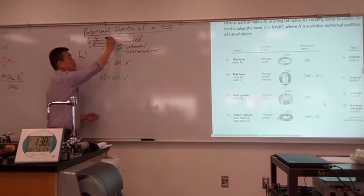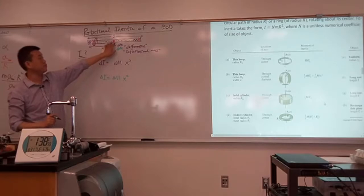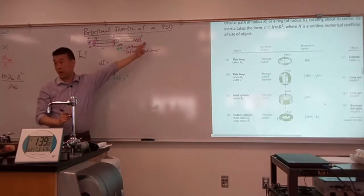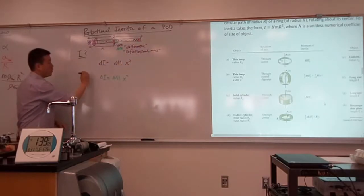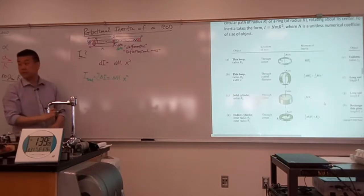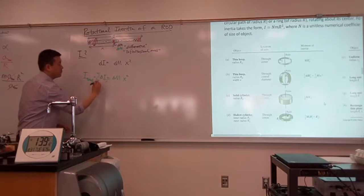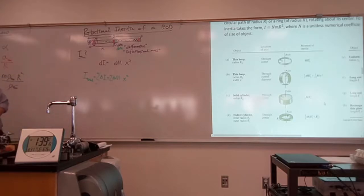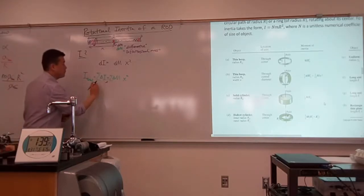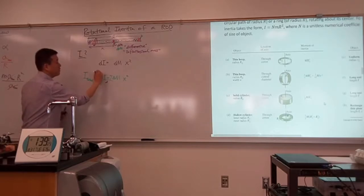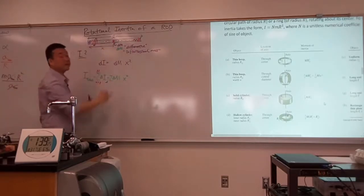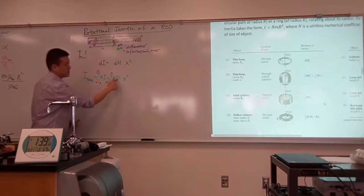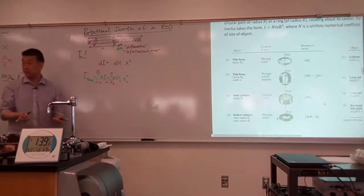If you wanted the rotational inertia of the whole thing, you would take this piece, take the piece next to it, take the piece next to that, and add them all up. For the total rotational inertia, you would simply add up all these contributions with the index going from 1 to n, where n is the total number of pieces you've broken it down to. This index would specify how much mass is in each little piece and what is the position of each little piece.